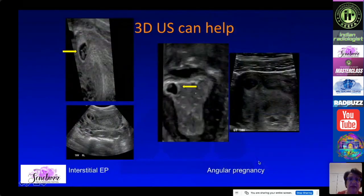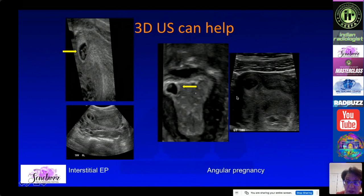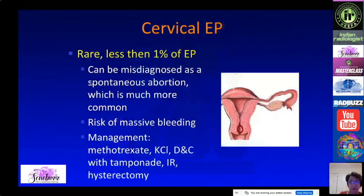3D ultrasound can help differentiate these entities. In the angular pregnancy case, 3D shows the sac is still within the uterus but at the edge, with some myometrium surrounding it. By contrast, the true interstitial ectopic pregnancy is more eccentric with no myometrium on the lateral aspect.